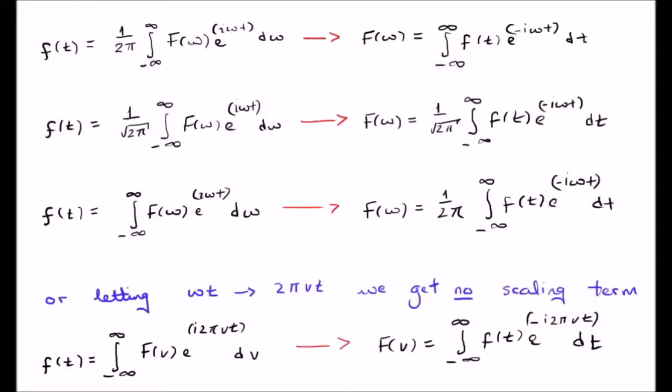So finally we come to the Fourier transform and the inverse Fourier transform, and I've written it in four different ways. On the left column we have a function of omega being transformed to a function of t. This is the inverse transform.